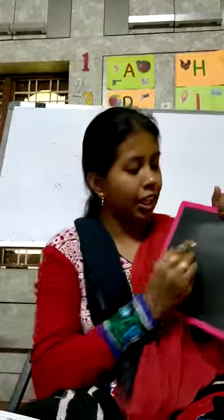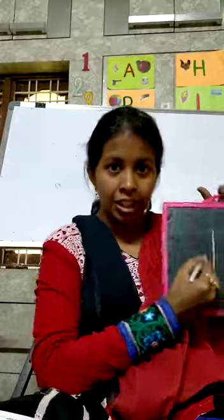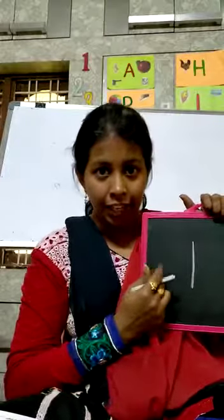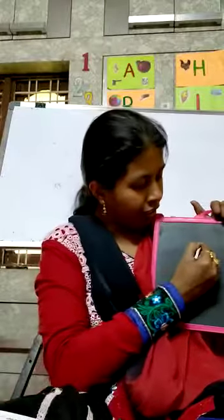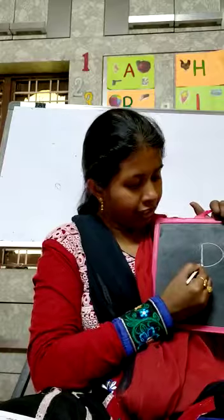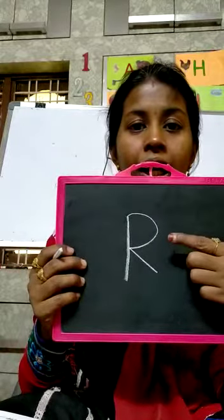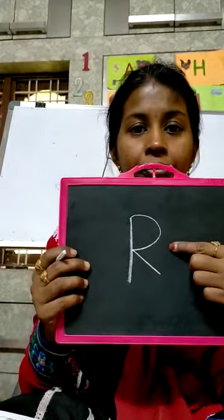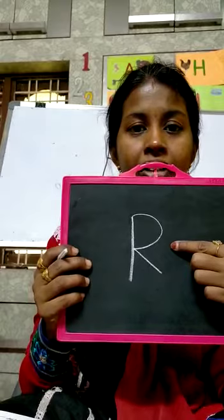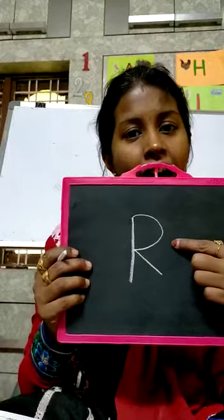How to write R? Standing line. Curve and slanting line. What is this? Capital R. What is this, children? Capital R.